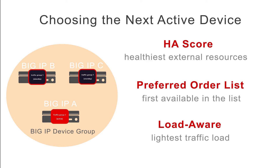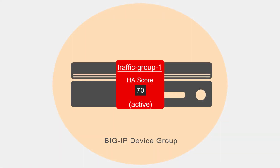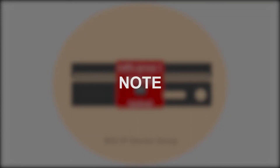Now let's take a look at each of these failover methods. An HA score is a numeric value that the Big IP system calculates continually on each device to indicate which device has the healthiest external resources, such as pool members or trunk links, for a specific traffic group. One thing to note: HA scoring is only available when you configure HA groups, a feature that triggers failover based on the health of those external resources. We won't go into details about HA groups in this video, but you can find out more information on our website, support.f5.com.